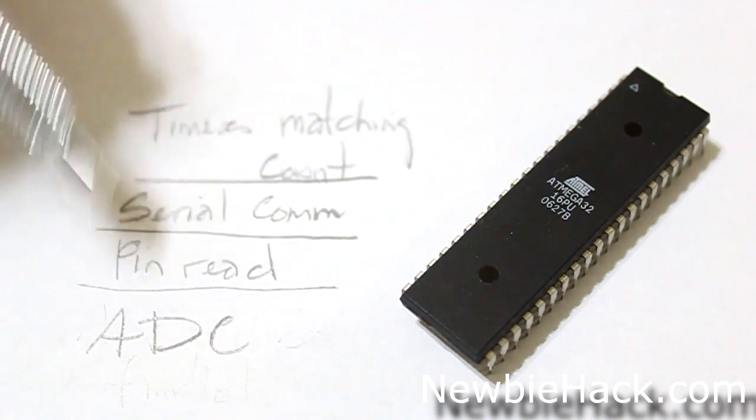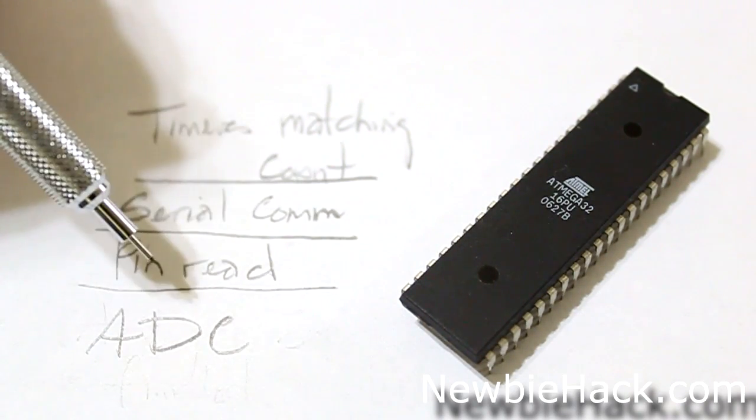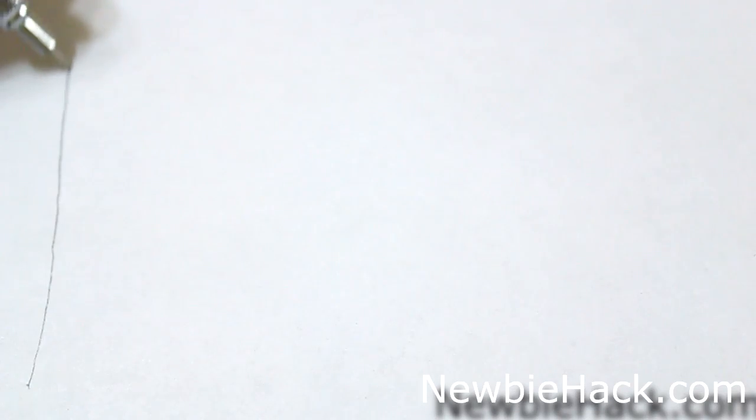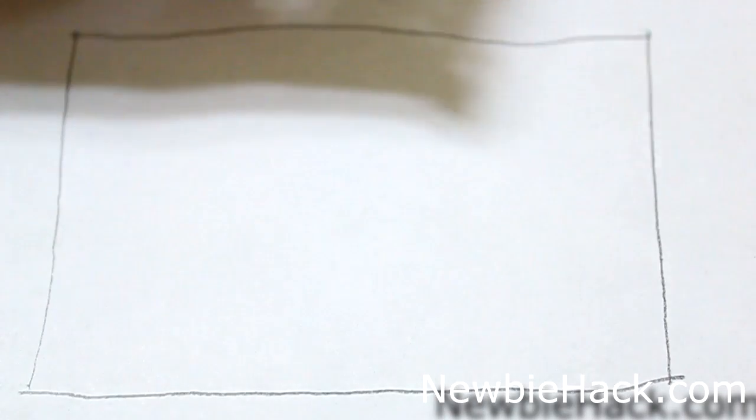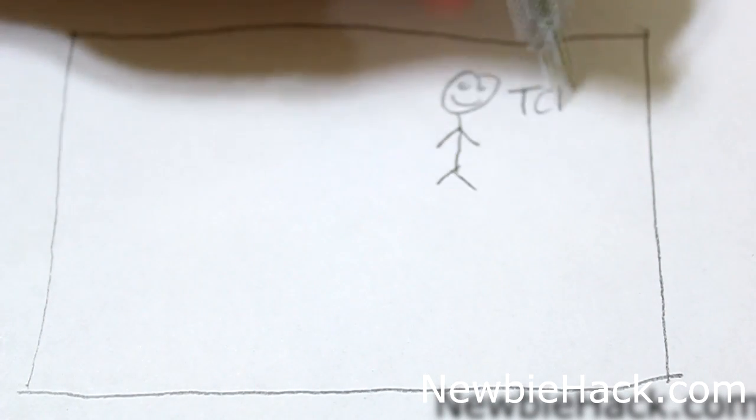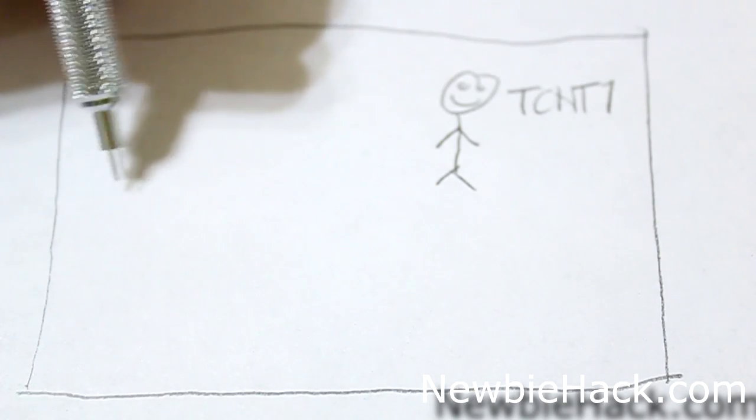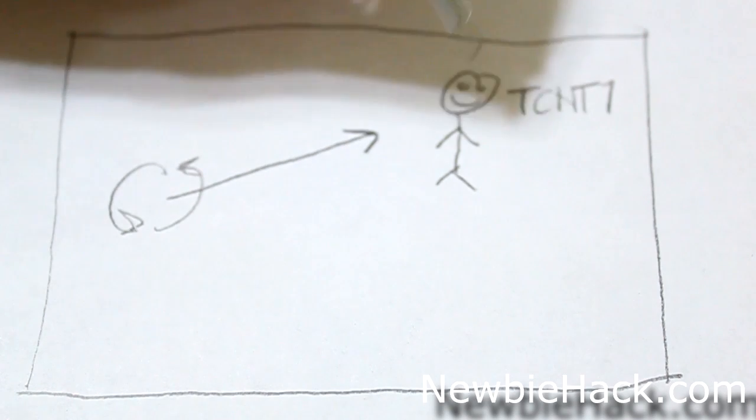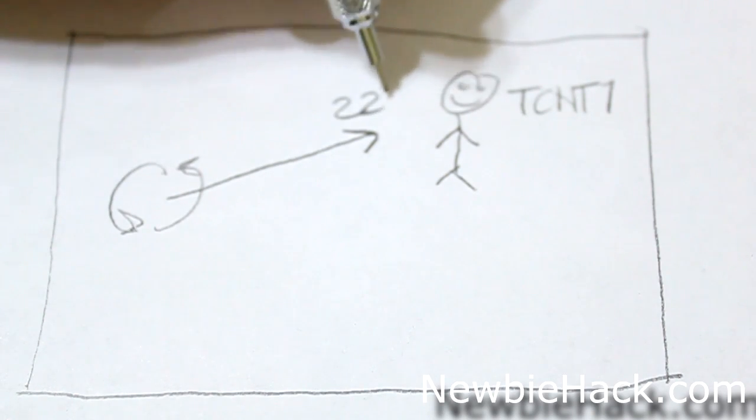There's even different combinations of interrupts for each one of these, and you can also implement software interrupts. In our previous program, we used Mr. TCNT to count for us.